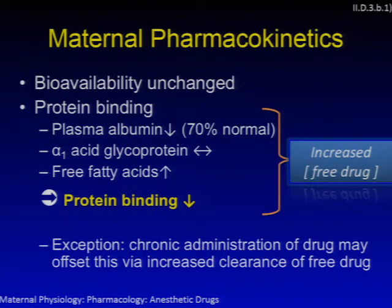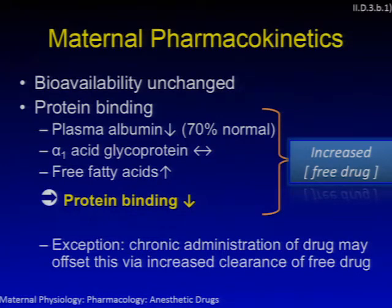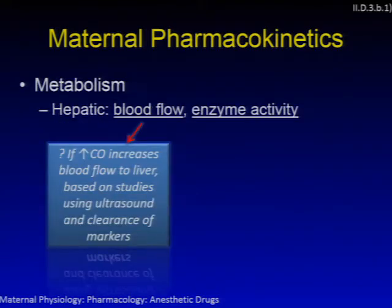Regarding maternal pharmacokinetics: bioavailability is unchanged in pregnancy, but protein binding changes — plasma albumin decreases to 70% of normal. There is no real change in alpha-1 acid glycoprotein, but an increase in free fatty acids, resulting in a decrease in protein binding overall and an increase in free drug concentration. Chronic drug administration can offset this by increasing clearance of the free drug. Most drugs are metabolized by the liver, depending on flow rate and enzyme activity, and it's unclear if increased cardiac output translates to increased hepatic blood flow.